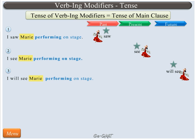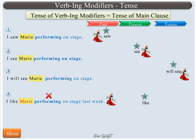Now, if the sentence is stated as 'I like Mary performing on stage last week,' then the author intends to state a fact that he likes Mary and this Mary performed on the stage last week, that is in the past. Thus, the actions take place at two different times. This is not possible since the action represented by the verb ING modifier always takes on the same tense as the main clause action. This can be corrected by changing the verb ING modifier to a relative clause, as in 'I like Mary who performed on stage last week.'